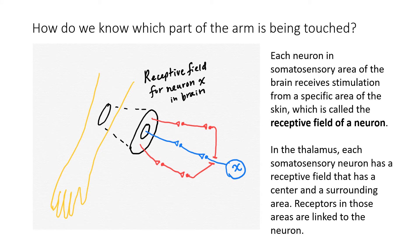Let's look at an example of sensory processing involving receptive fields. How do we know which part of the arm is being touched? Each neuron in the somatosensory area of the brain receives stimulation from a specific area of the skin. This particular area is called the receptive field, right here.